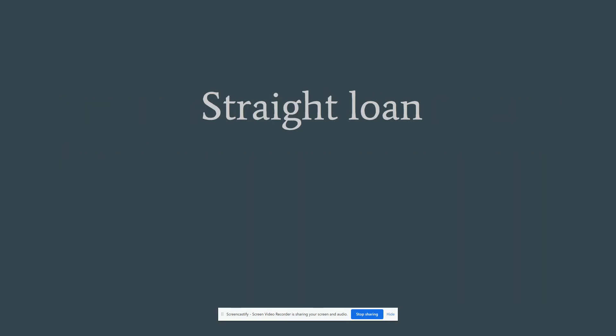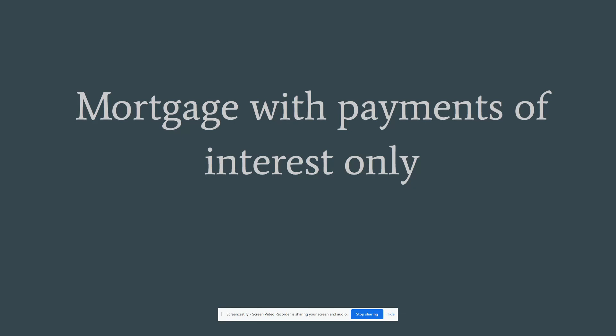Straight loan. This is a mortgage with payments of interest only. This is not a typical first-time home buyer primary mortgage situation. It's usually for something like a home improvement loan where you're paying interest only, and then when you sell the property, the principal is due at that point. It's usually for a periodic time — just interest only — and then the principal is all due at once.